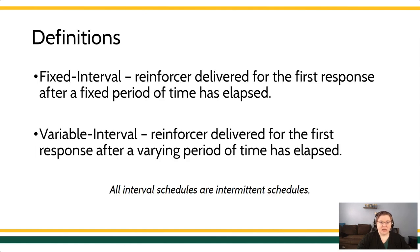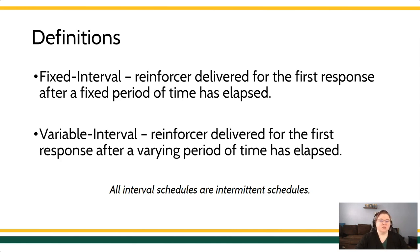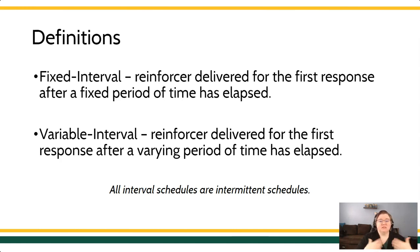In a fixed interval schedule, the reinforcer is delivered for the first response that occurs after a period of time has elapsed, and that period of time is the same every time. So it's a two-parter. You have to have a period of time that elapses or passes, and then you have to emit a response, and that first response is going to contact the reinforcer.